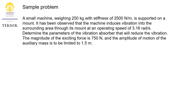Moving on to a sample problem: we have a small machine with a weight of 250 kg, supported on a mount with a given stiffness. It has been observed that the machine induces vibration at this operating speed omega. We are asked to determine the parameters of the vibration absorber — the values of k2 and m2 — to reduce the vibration. The magnitude of the exciting force is F0 = 750 N, and the amplitude of motion of the second mass is limited to 1.5 meters, which is our capital X2.